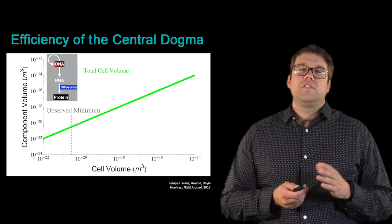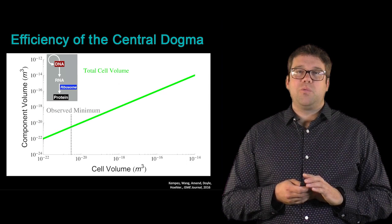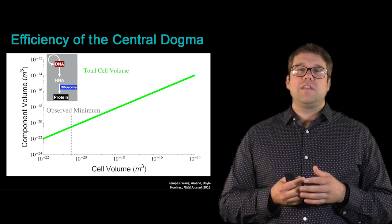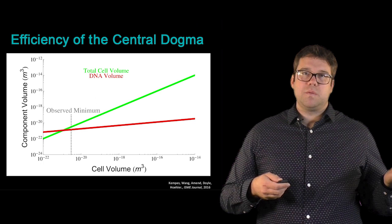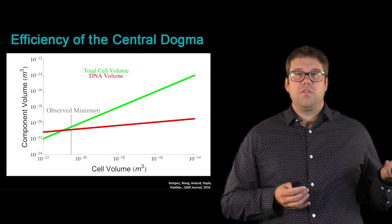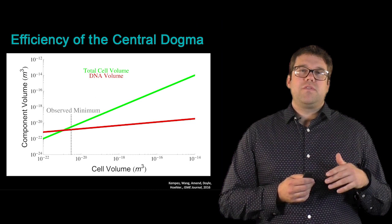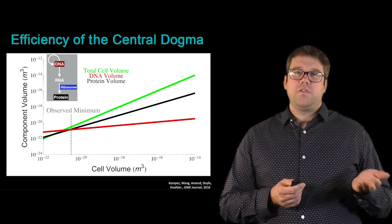In these plots, which are log-log, you'll see cell volume against the volume of a particular component, where the green line is simply the one-to-one line representing total cell volume. What we've been able to show is that as cells become bigger, you require less and less volume for the DNA, which follows a power law. At the small end, this DNA volume is taking up almost the entire cell volume. As you can see, where this red line intersects this green line, DNA is roughly 50 percent of the total cellular volume.